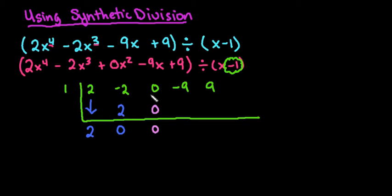And so if you forget that 0, it will cause a problem. And then I would have 1 times 0 again, which is 0, which gives me negative 9, and 1 times negative 9 gives me negative 9. So this one happens to have a remainder of 0.